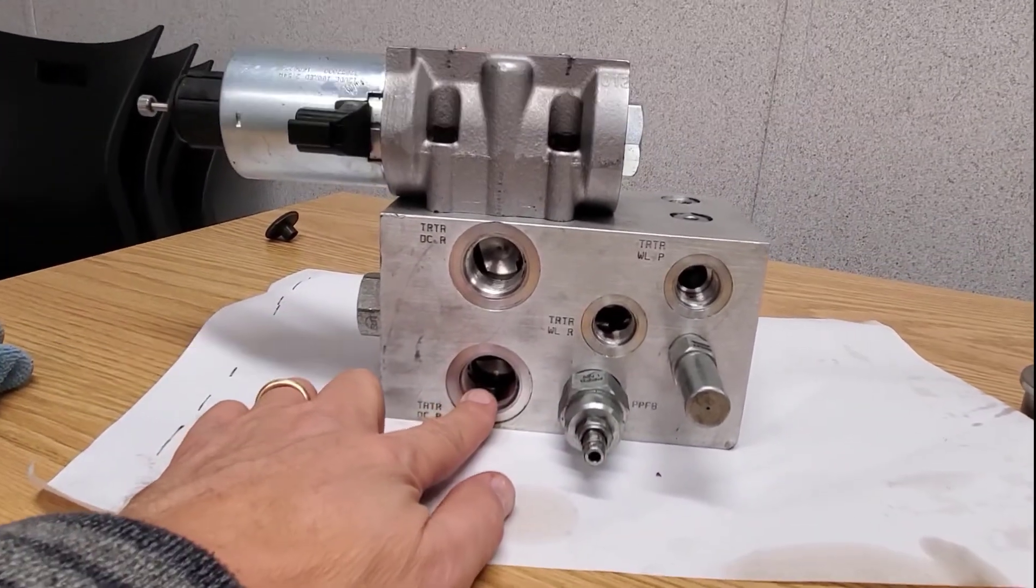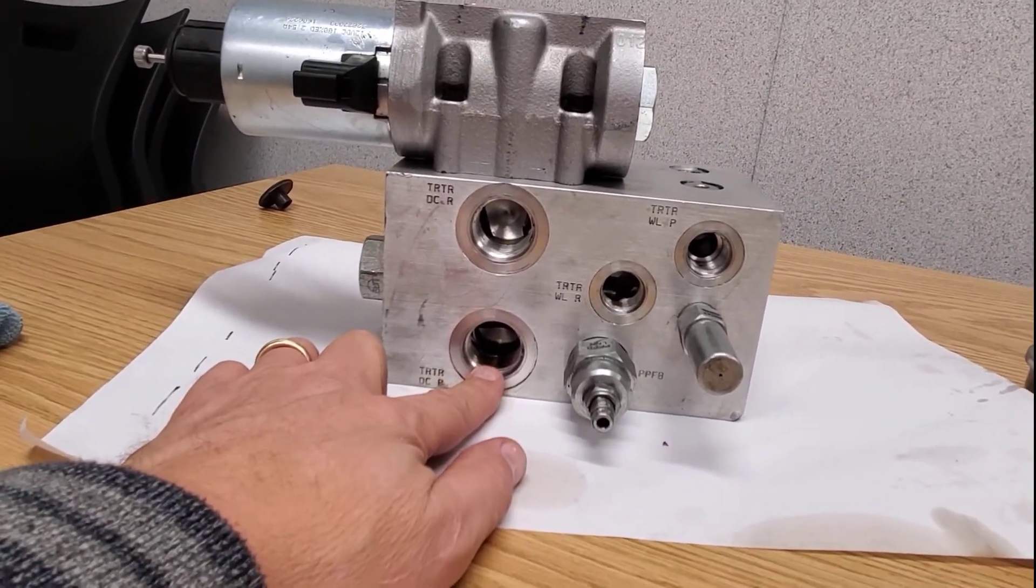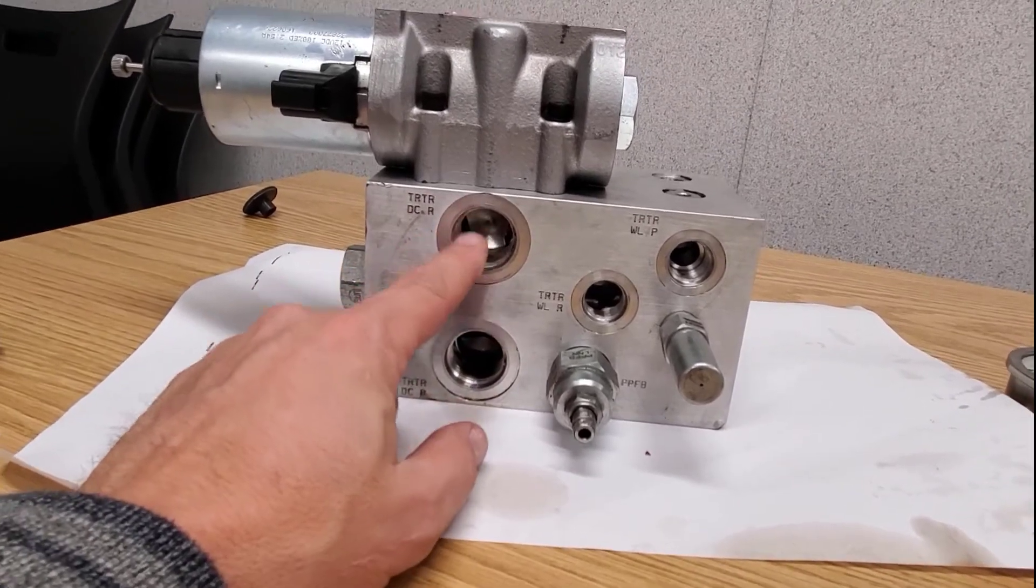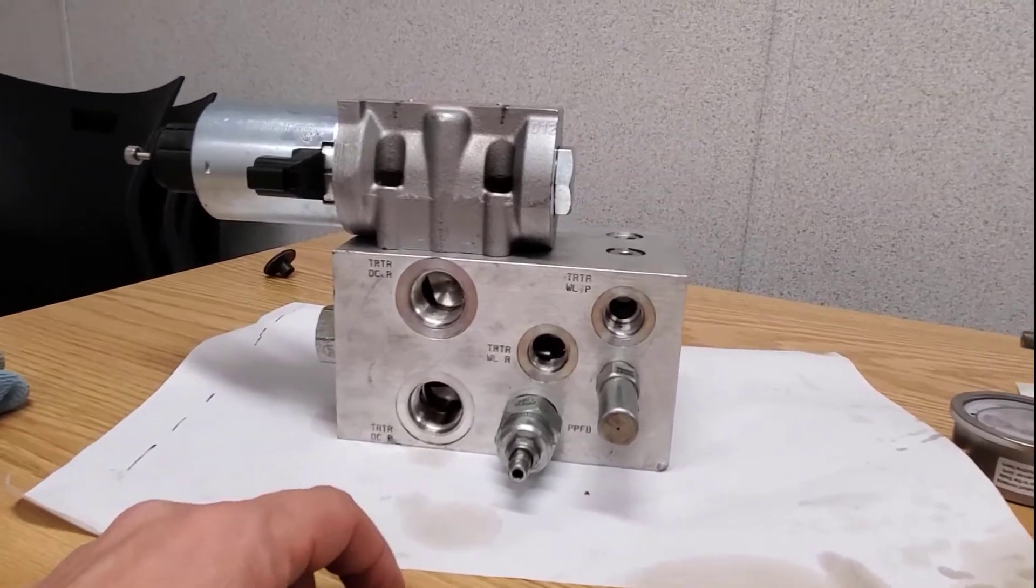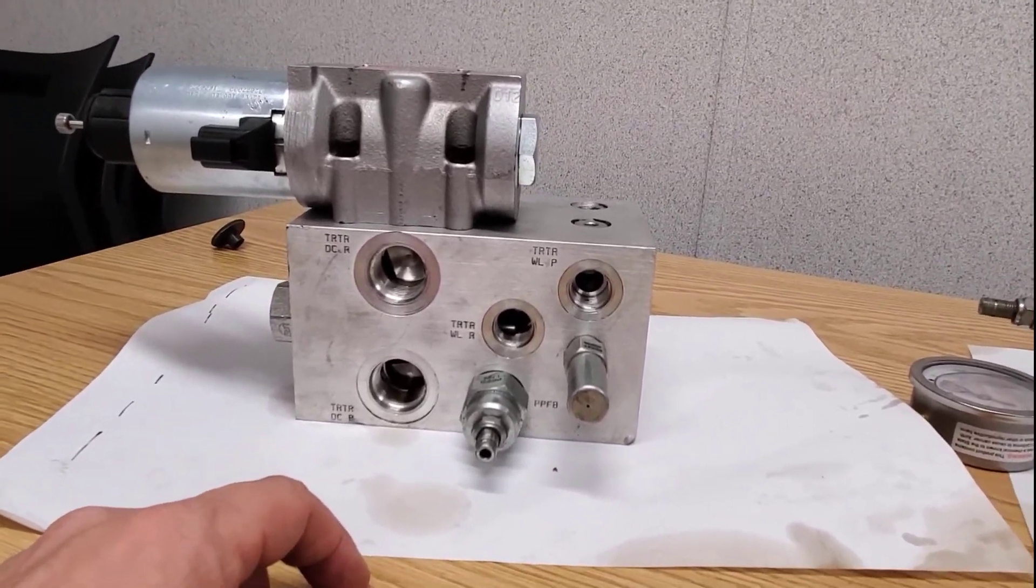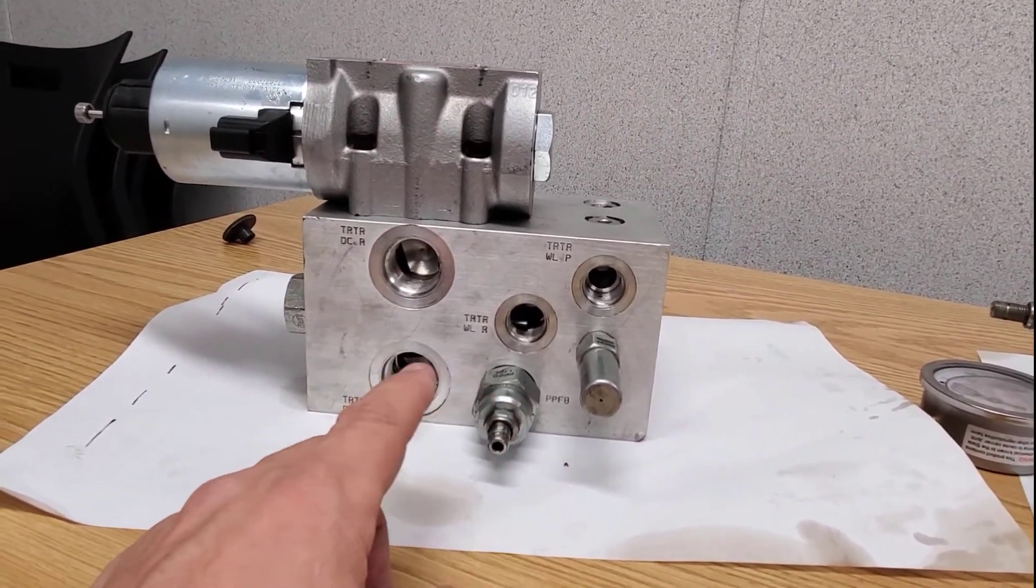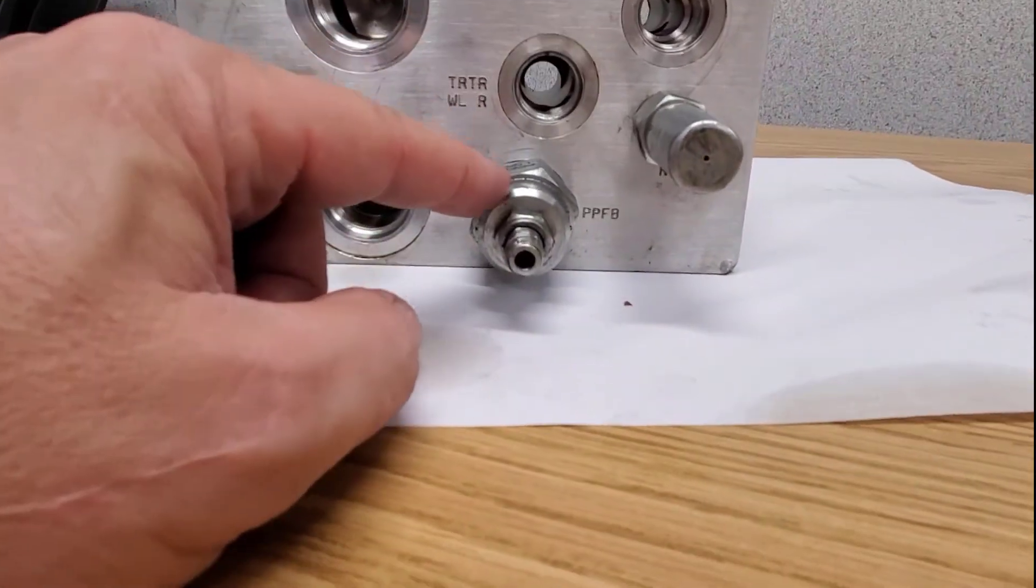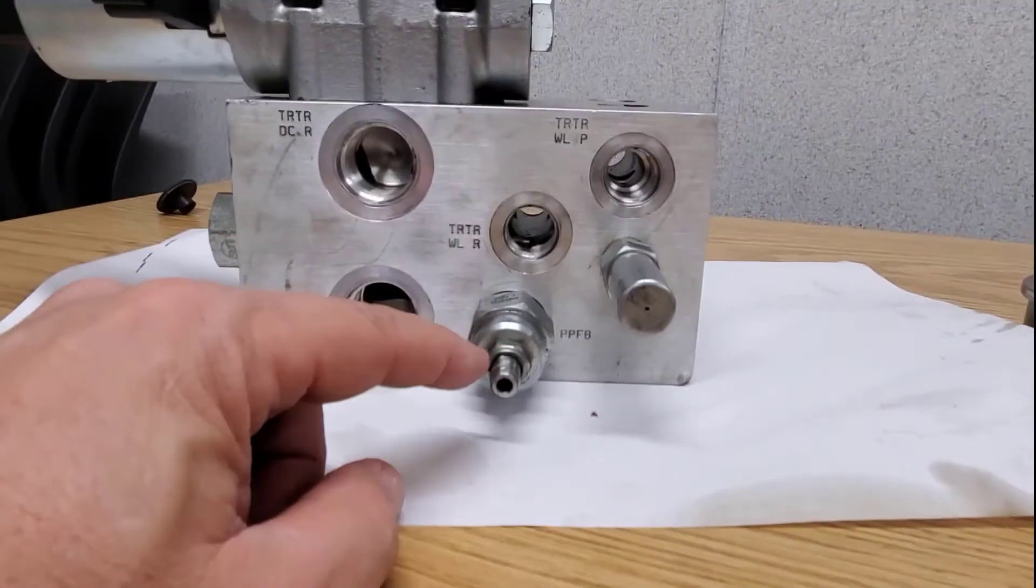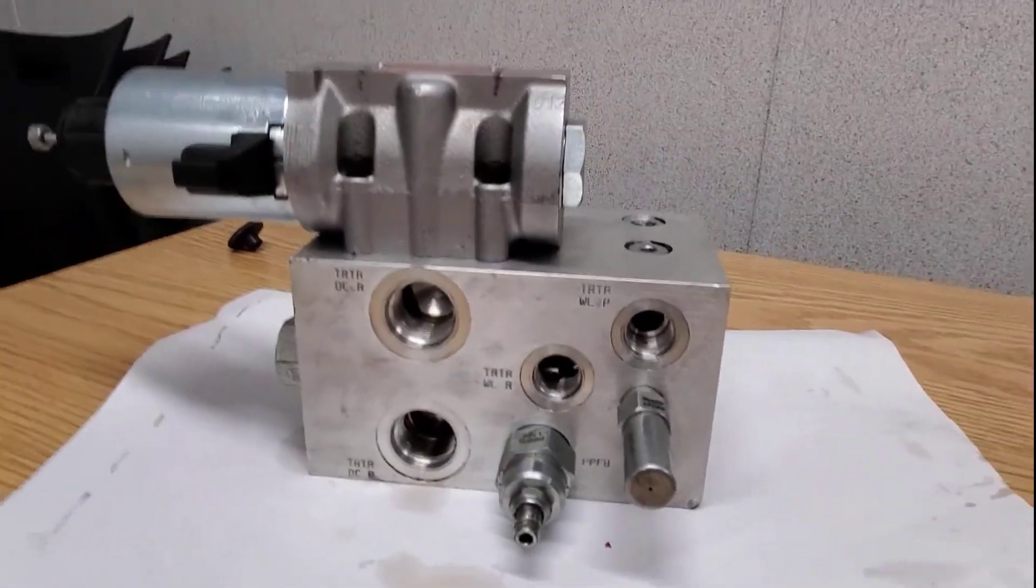So we have our pressure to our depth circuit engaged here and then our return. Our two pilot operated check valves open to allow path for the inner wing cylinder to retract and extend. Then we have a valve called PPFB and a gauge on the top of the block.